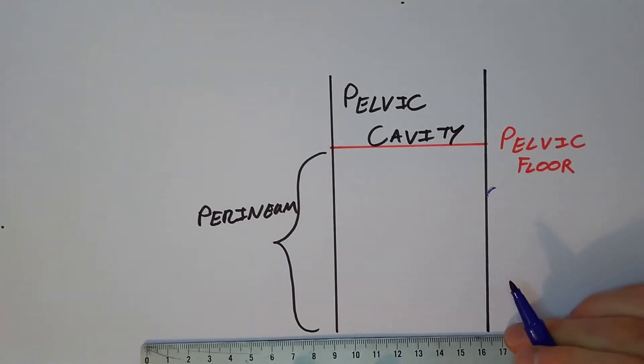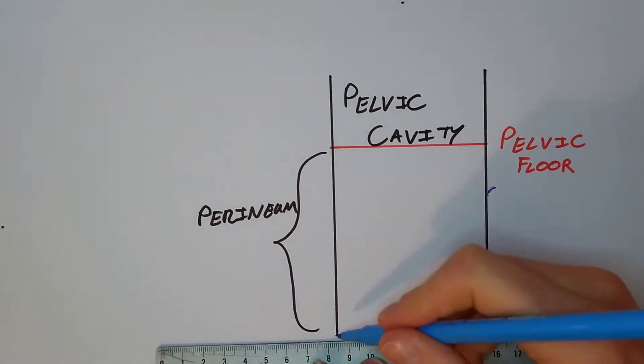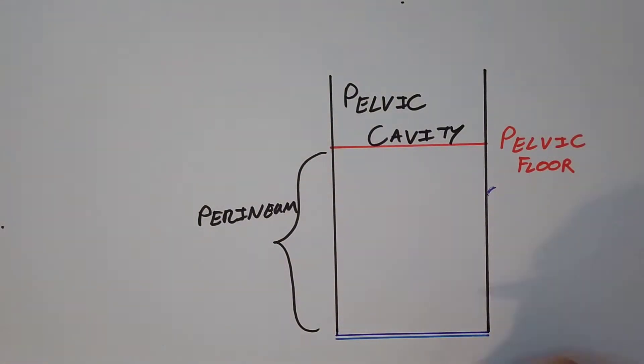Now apart from the skin, the perineum is sealed off from the outside world by a layer of superficial fascia, which itself has a superficial and a deep aspect.